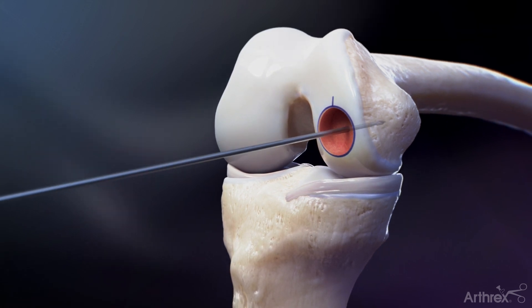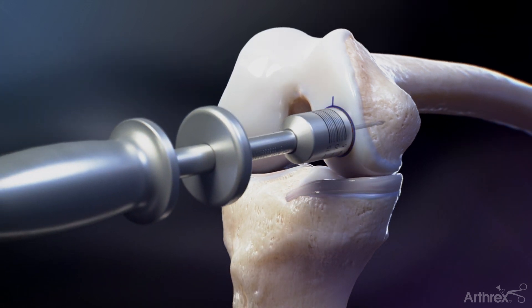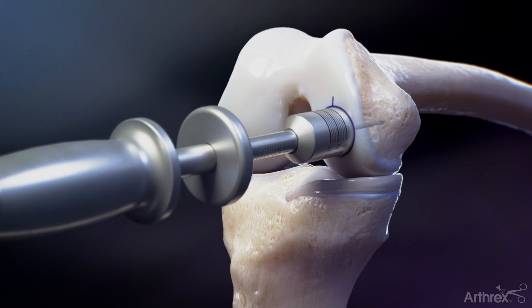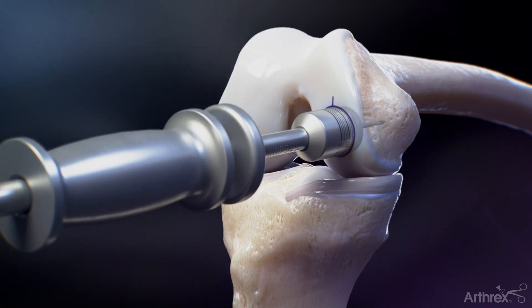Thread the appropriately sized allograft OATS dilator onto the slap hammer and insert it into the recipient socket site to achieve a 0.5 mm socket dilation. Advance the dilator until it has seated fully into the socket.